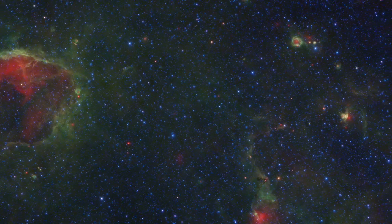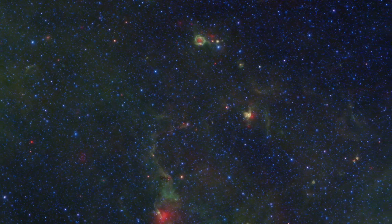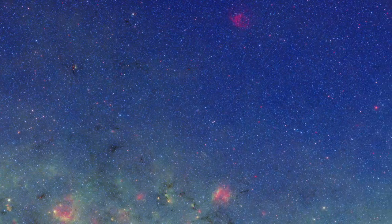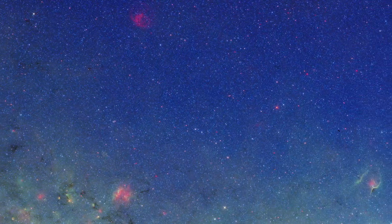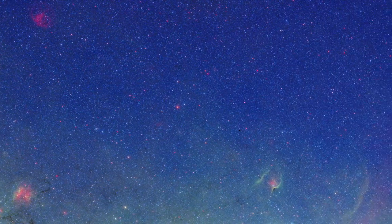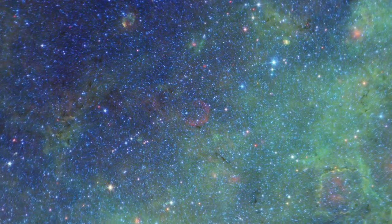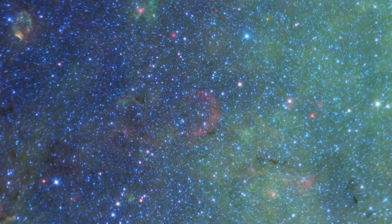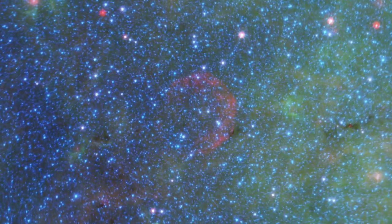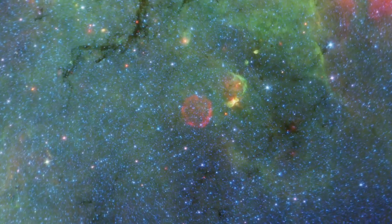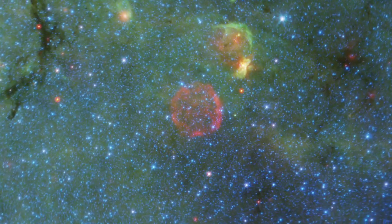The stars eventually drift beyond their birthplaces, mixing among their older cousins. This diffuse blue glow shows us the overall distribution of stars throughout the galaxy. Eventually, the most massive stars die in supernova explosions. We can see their expanding shockwaves rich in newly forged heavy elements that will help form the next generation of dust and stars.